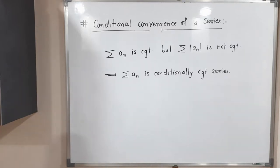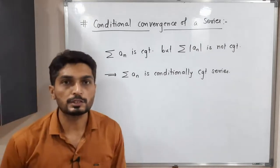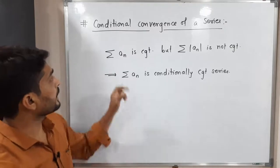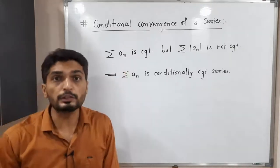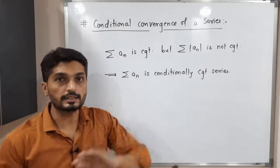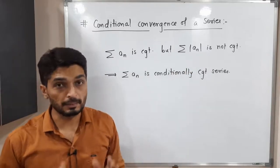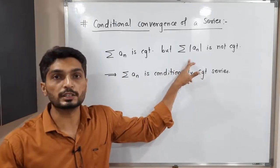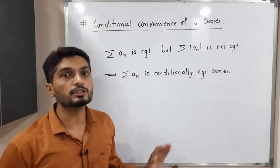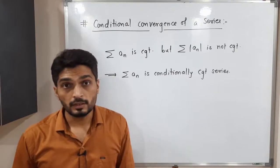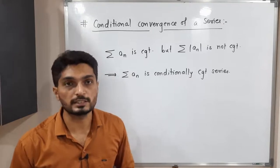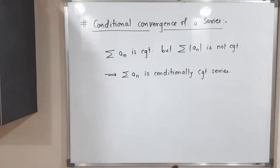Now let us discuss the definition of conditionally convergent series. We say a given series is conditionally convergent when the given series is convergent, but when you take the modulus of its terms, that series is not convergent — meaning the series is convergent but it is not absolutely convergent. In that case, we say the given series is conditionally convergent.